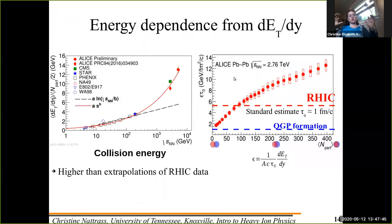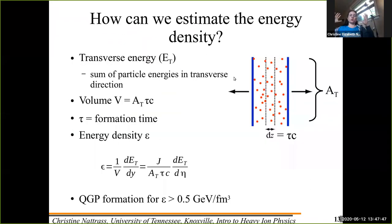What you do is that you assume that you have two incoming nuclei, and each of them is moving roughly at the speed of light. So if you want to estimate the volume of this system, it is roughly the time that it takes to form the quark gluon plasma times the speed of light.